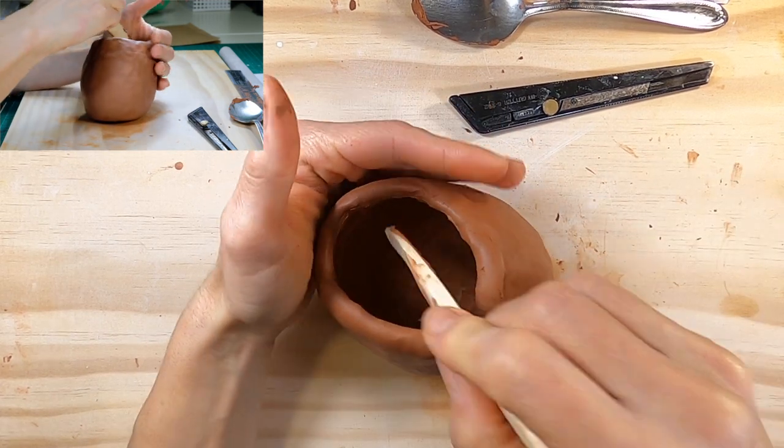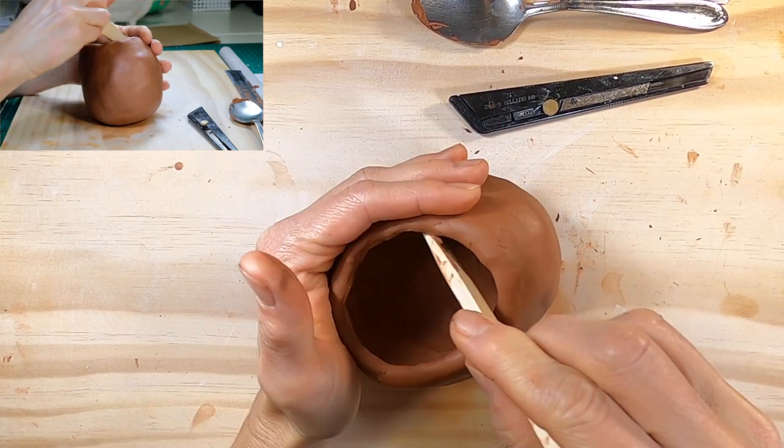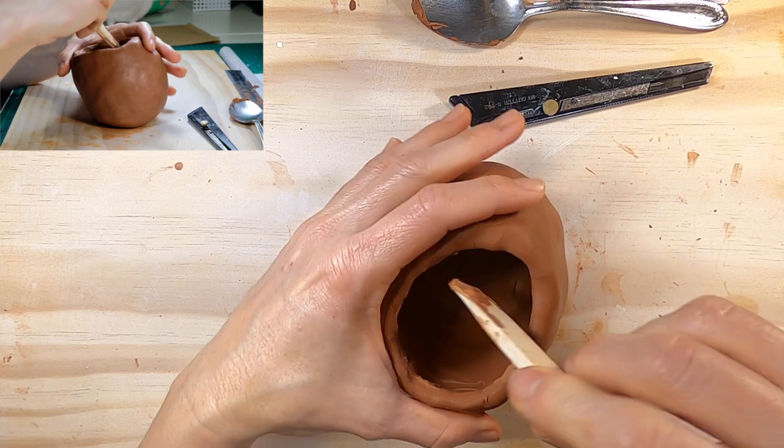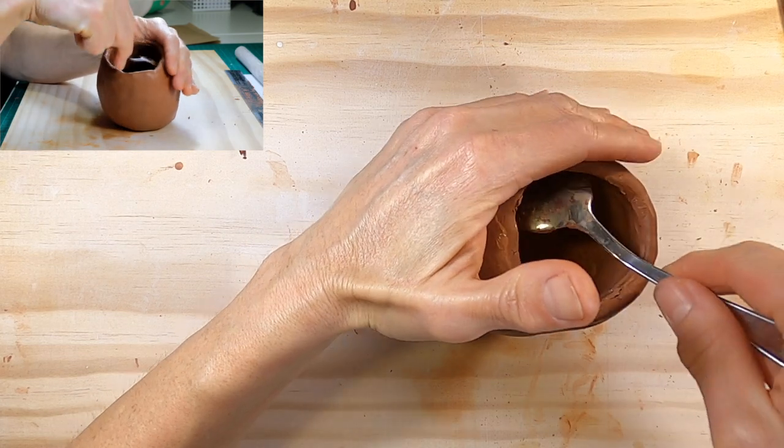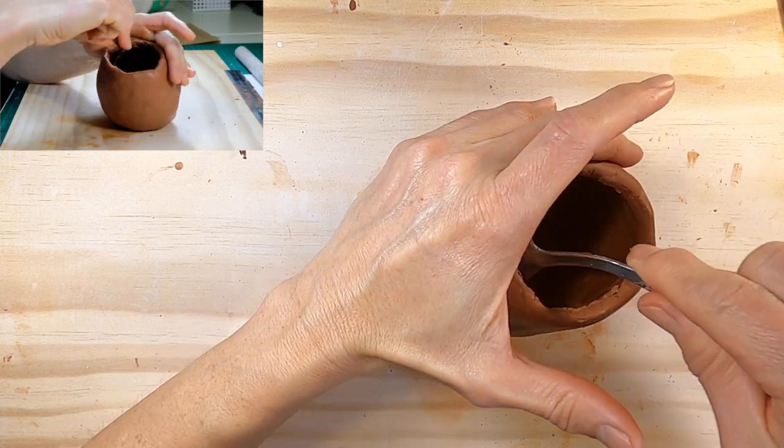This is a wooden sculpting tool. It has a smooth rounded tip which is good for evening out the surface of the clay. As I press the inside, I'm still making sure that my other hand is supporting the outside surface.